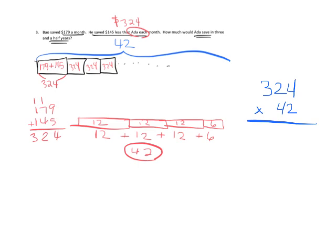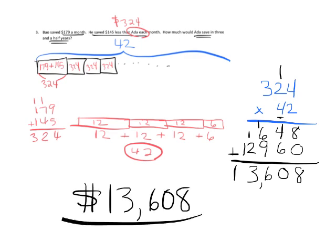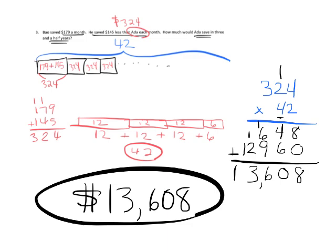Using the standard algorithm for 324 times 42: 2 times 4 is 8, 2 times 2 is 4, 2 times 3 is 6. Now multiplying by the 4, which is really 40, so it ends in a 0: 4 times 4 is 16 (carry the 1), 4 times 2 is 8 plus 1 is 9, and 4 times 3 is 12. Adding together: 8, then 4 and 6 is 10 (carry the 1), then 1, 6, and 9 gives 16 (carry the 1), then 1 and 2 is 3, and 1. So Ada is going to save $13,608 in her three and a half years.